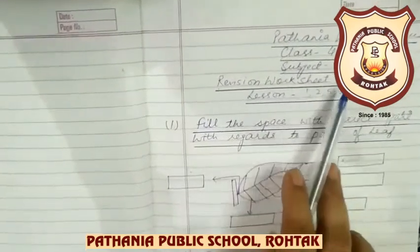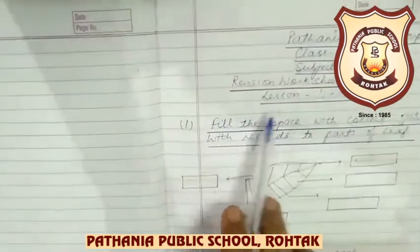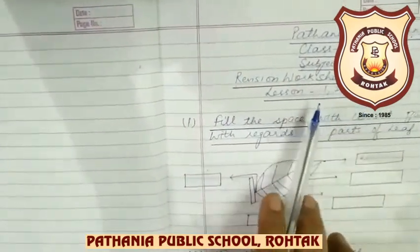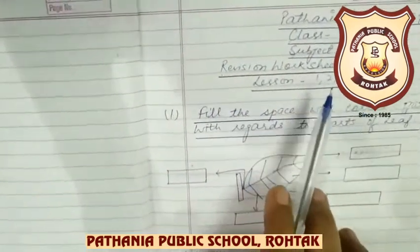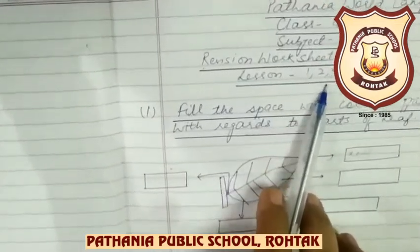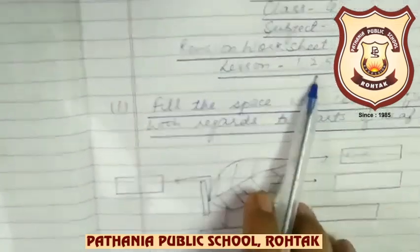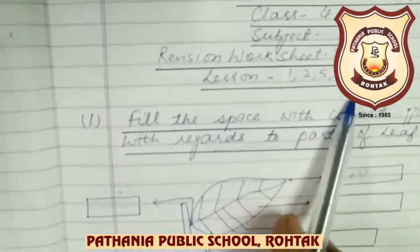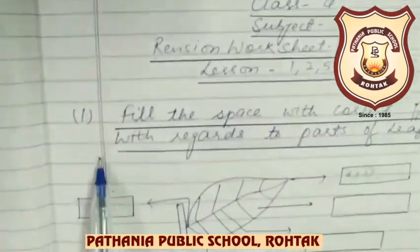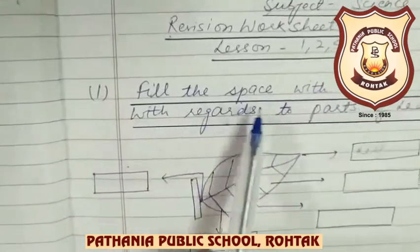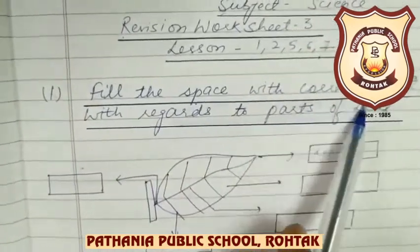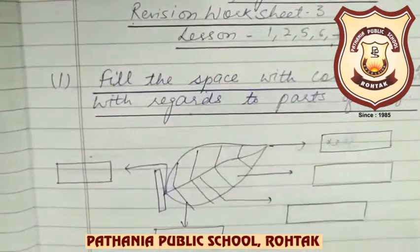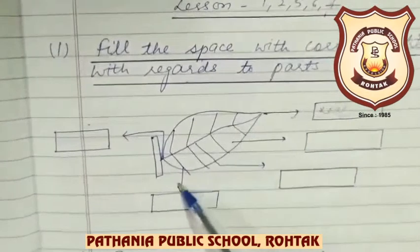Today we will do revision worksheet 3, of lesson 1, 2, 5, 6, 7. This is the syllabus of your EV1 Evaluation 1. So the first question is: fill in the space with the correct part with regards to parts of the leaf.